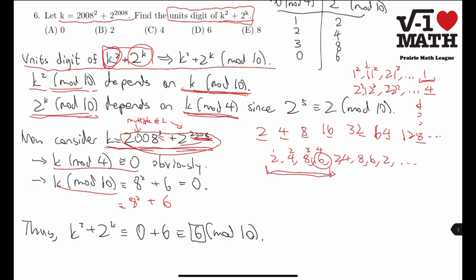And if we add these up, we get 4 plus 6 mod 10, which is congruent to 0 mod 10. Therefore, we have that k mod 4 is 0, and k mod 10 is also 0.